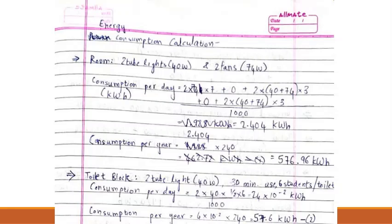We first calculate the energy requirement of a room. For this we consider an average schedule of a student that is given in the problem statement. For the following problem statement, we calculate the power requirements of the two tube lights and the two fans that are there in the room. Multiplying 8 by 240, we get the average consumption per year of a room in kilowatt hours, that is 576.96 kilowatt hours.